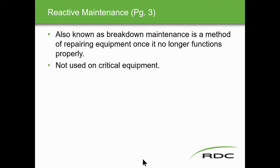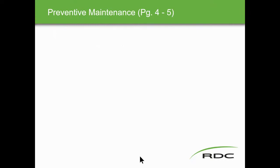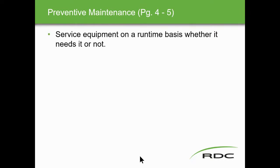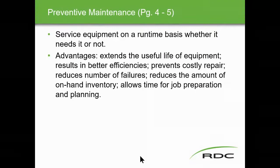Reactive maintenance is not used on critical equipment because if you just reacted to that critical equipment, it could shut your plant down. Preventive maintenance means we service equipment on a runtime basis, whether it needs it or not. A typical example is an oil change — every 10,000 or 20,000 kilometres, we do an oil change. The advantages of preventive maintenance: extends the useful life of equipment, results in better efficiencies, prevents costs to repair. Because if you get catastrophic failures because you didn't do preventive maintenance, most of the time they become more costly. Reduces the number of failures, reduces the amount of on-hand inventory, and allows time for job preparation.